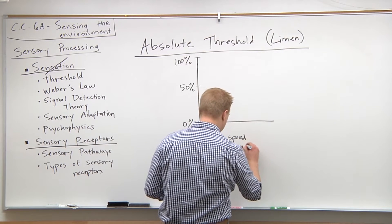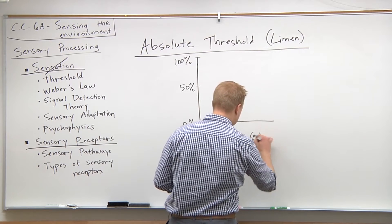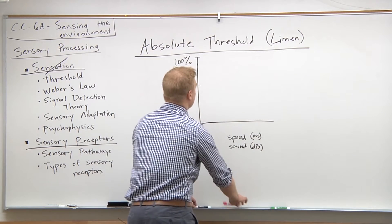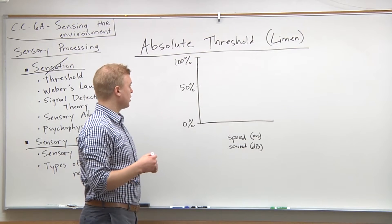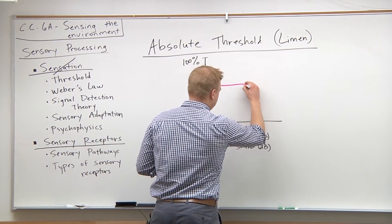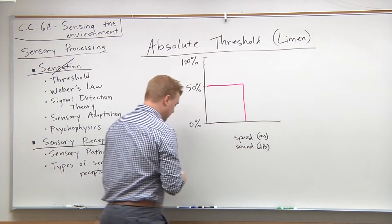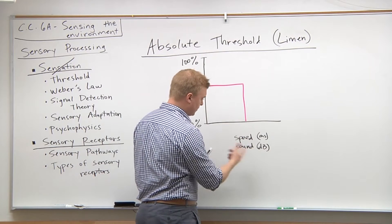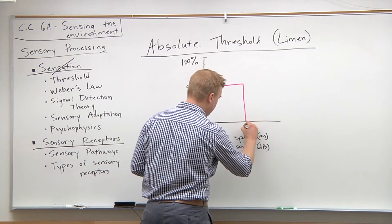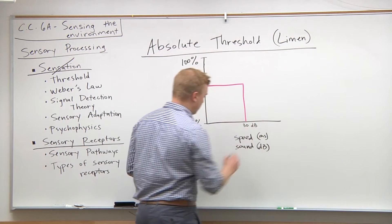If we're talking about absolute threshold, we're talking about detecting the stimulus 50% of the time. This is going to be a certain speed or a certain sound. Sound, I think, is going to be about 30 decibels for hearing.